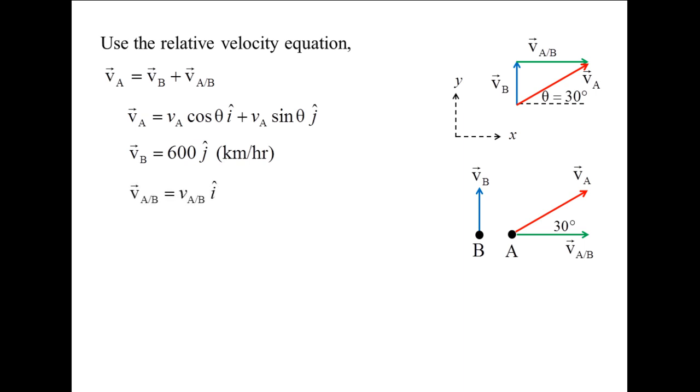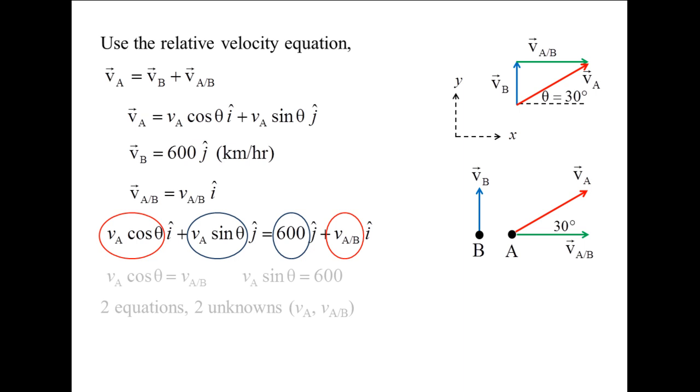Plugging in expressions for all three velocities and separating the x terms and the y terms, we obtain two equations and have two unknowns and can solve for the magnitudes of VA and VAB.